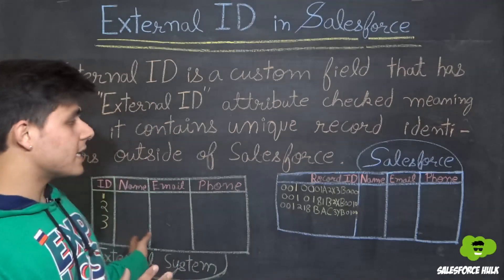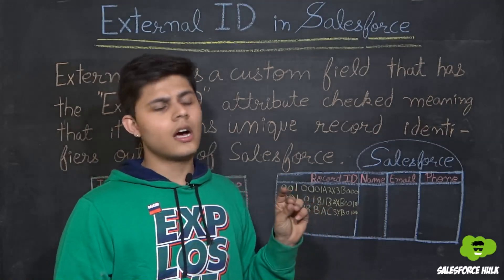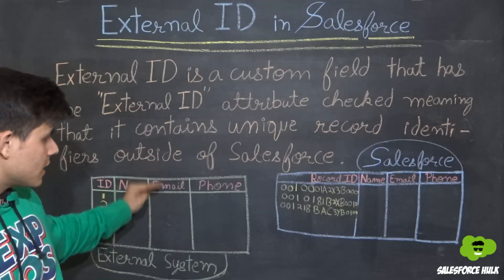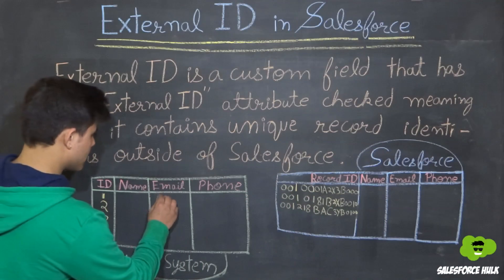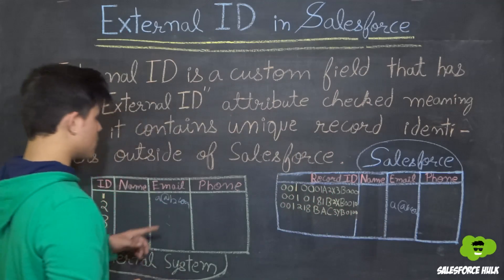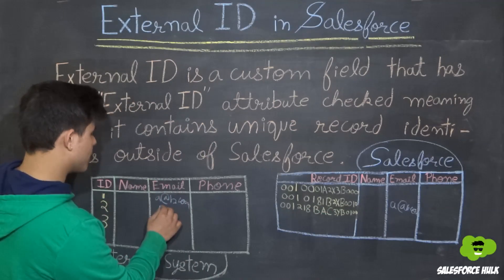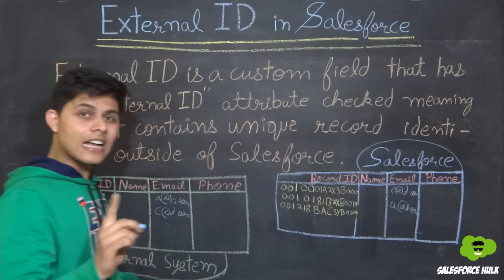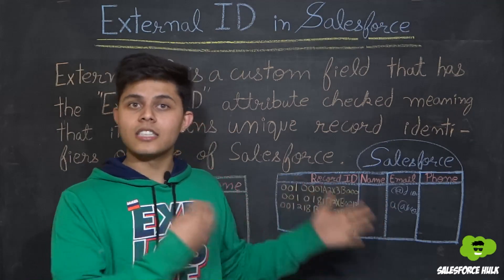For example, let's say we have selected email as an external ID in Salesforce. In that situation, whatever records we are updating from the external system, the email ID of the records needs to be unique. If I have a record with email a@b.com in the external system and a@b.com in Salesforce, then the phone number and name from the external record will get updated on that Salesforce record. Similarly, c@d.com in the external system will match and update the corresponding Salesforce record.